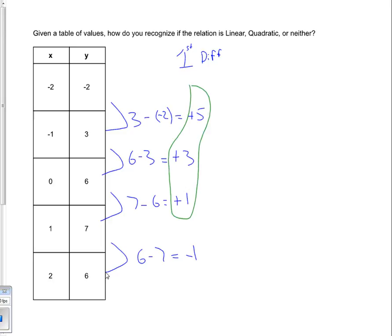If your first differences are all the same, then what that means is that you've got a linear relationship. But these first differences are not the same.